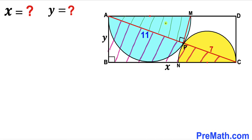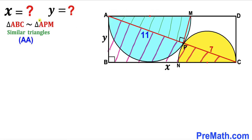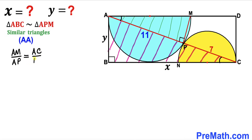Let's focus on two right triangles: the big right triangle ABC and right triangle APM. These two triangles are similar according to the angle-angle similarity theorem, since both have 90-degree angles and the remaining angles are alternate interior angles that are congruent. As a result, we set up a proportion: AM divided by AP equals AC divided by BC.